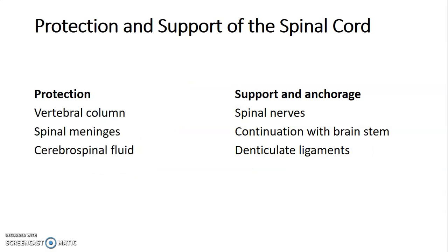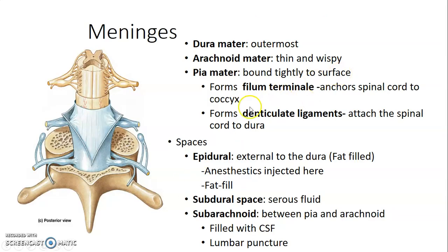The spinal cord is protected and supported by different structures. Protection is provided by the vertebral column and the meninges — dura mater, arachnoid mater, and pia mater — and by cerebrospinal fluid in the subarachnoid space. Support is provided by spinal nerves as they exit, by its continuation with the brainstem, and laterally by the denticulate ligament. The dura mater is the outermost layer, followed by the flimsy arachnoid mater, and pia mater tightly bound to the surface of the spinal cord.